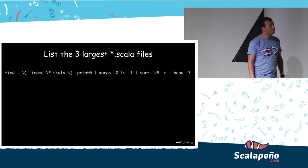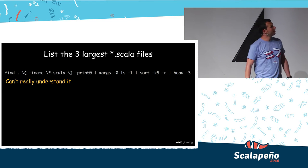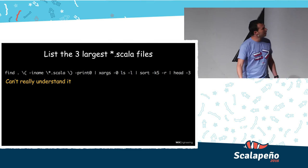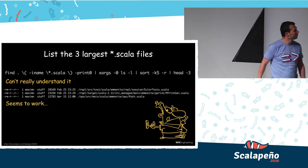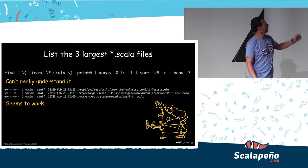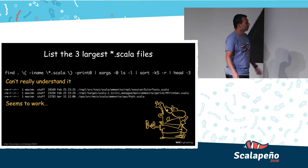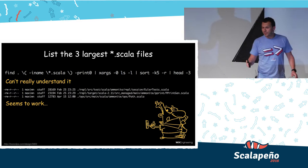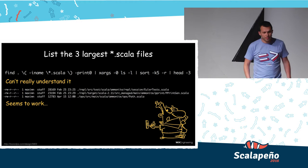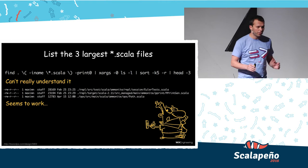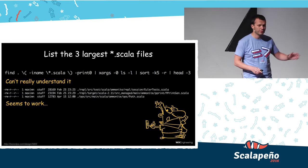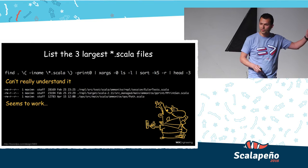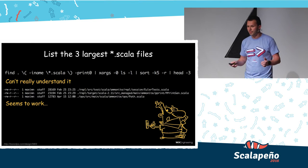You look at it but you can't really understand it. So you look at it again, but you still don't understand it. And you say, okay, I'll just run it — and it seems to work. But that's the problem: it seems to work. This is the level of confidence we have in many of our shell scripts. And in addition to this low level of confidence, the result here is a string that we now need to parse and extract the data from.